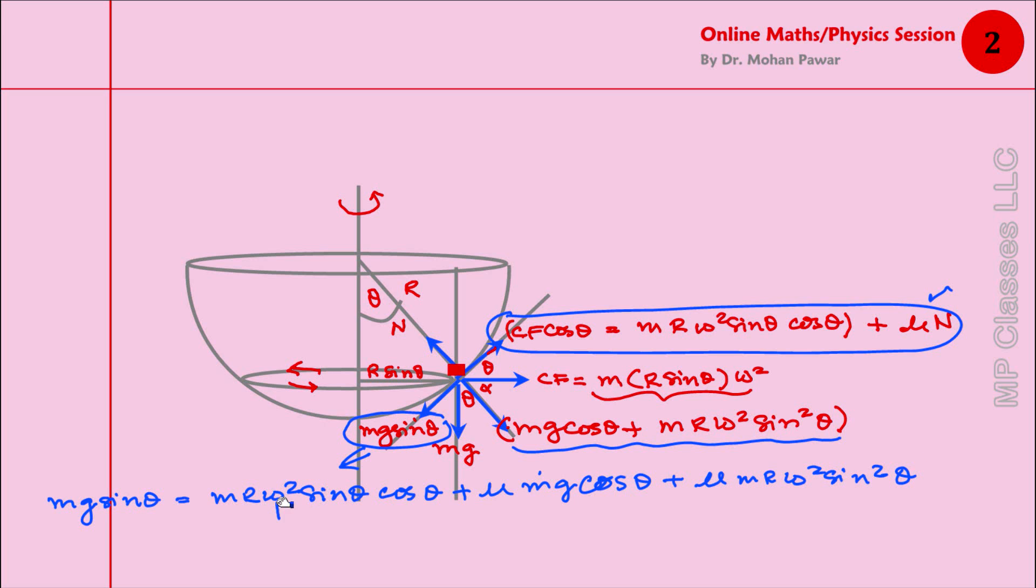There is ω² here, there is ω² here. We need to find what values of ω will guarantee absence of slippage, so we combine those together. ω² times (mR sin θ cos θ plus μmR sin² θ) remains on one side, and this will remain as mg sin θ plus μmg cos θ.